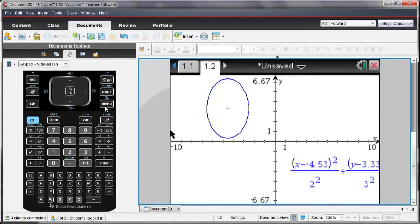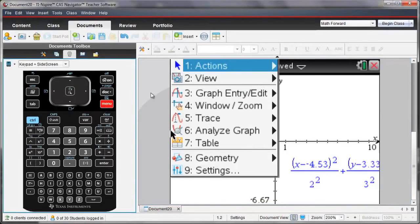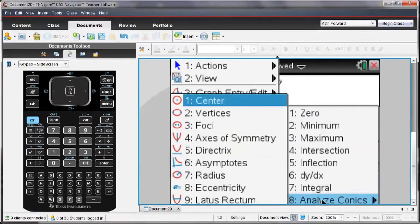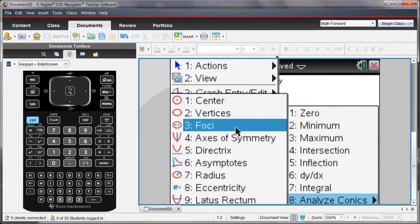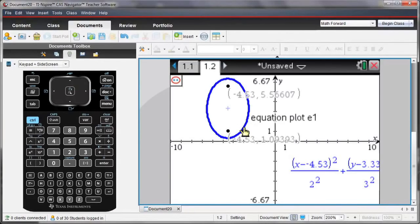I can also analyze properties of this ellipse by selecting Menu and analyzing the conics. I'm going to go ahead and find the foci. So I select the ellipse, and the values of the foci appear on the screen.